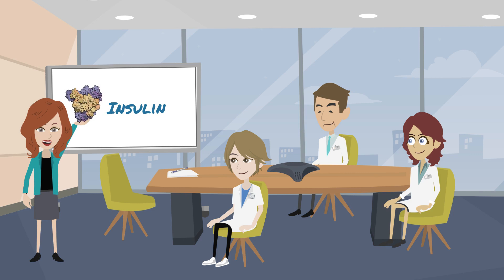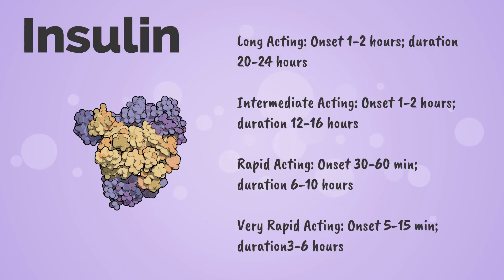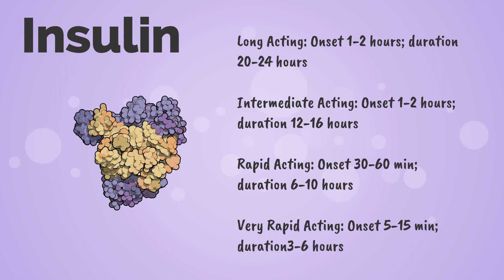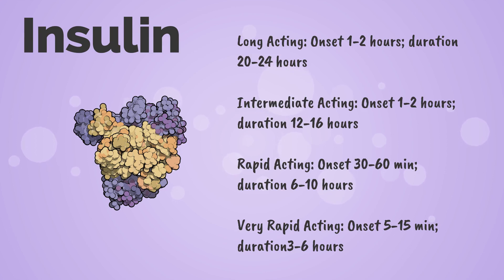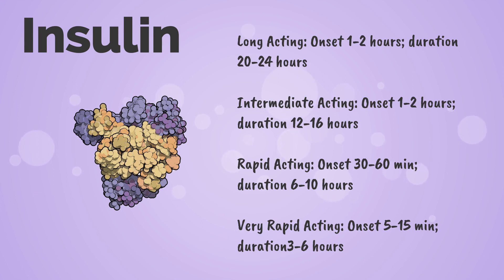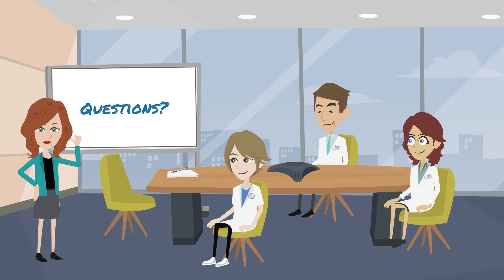The mainstay of therapy for many patients will still be insulin. Insulin can be long-acting, intermediate-acting, rapid-acting, or very rapid-acting. Long-acting insulin is usually administered daily, occasionally twice a day. Intermediate insulin, such as NPH, is one of the most common insulin regimens and is given twice a day in conjunction with rapid-acting regular insulin used at meals. Very rapid-acting insulin, such as Aspart or Lispro, can also be useful in conjunction with long-acting insulin with meals.